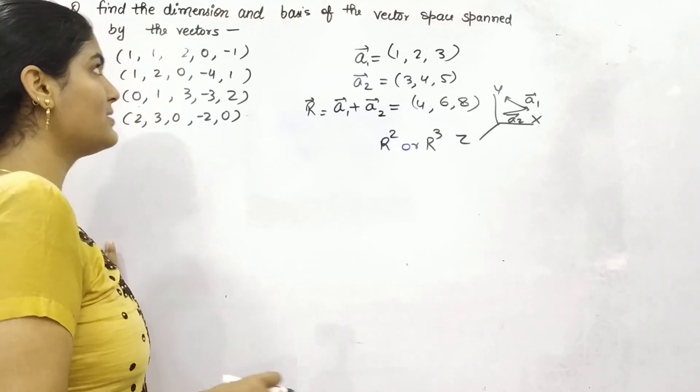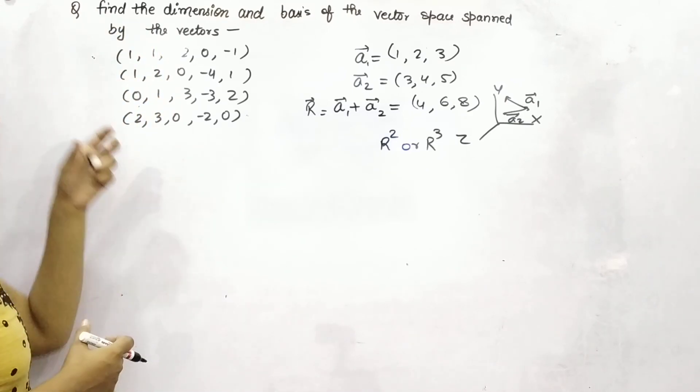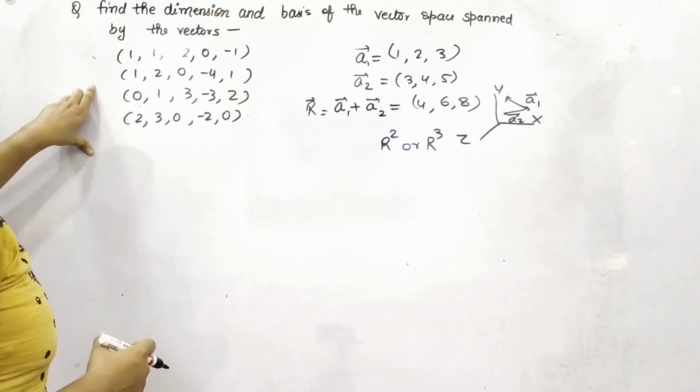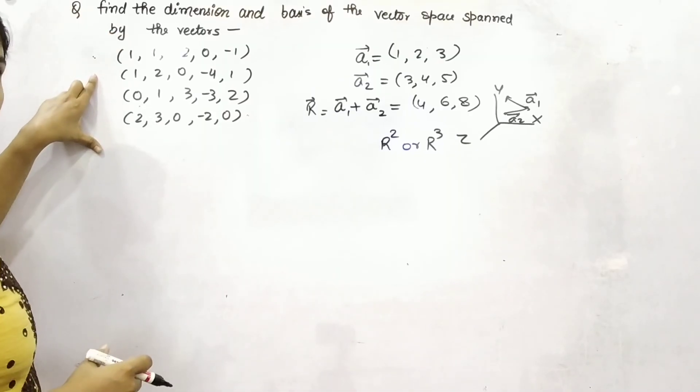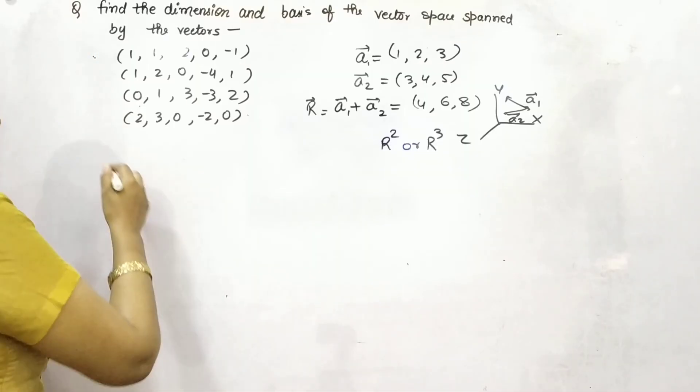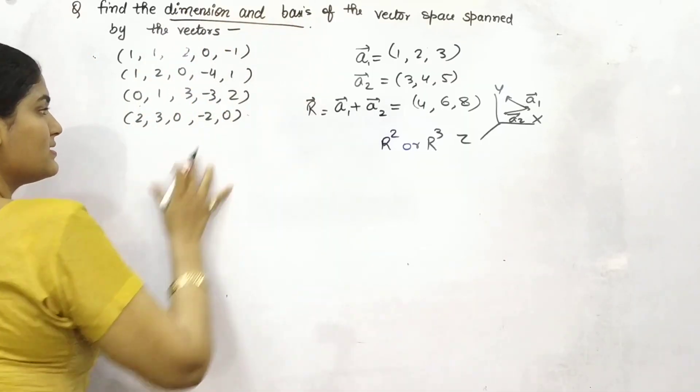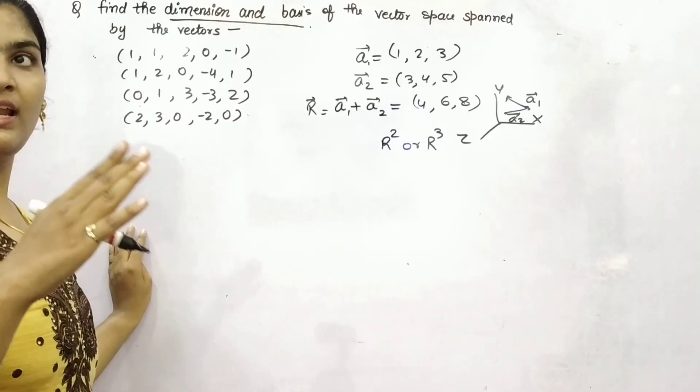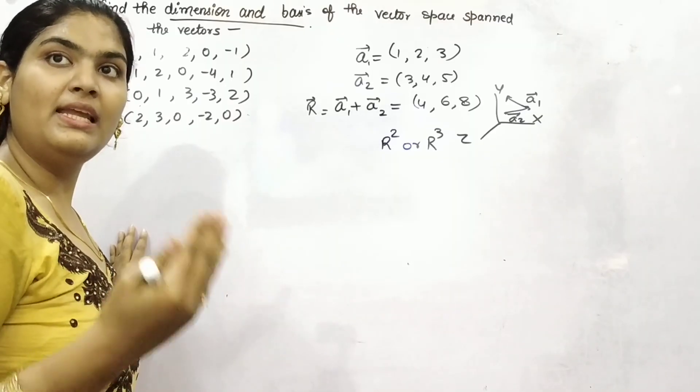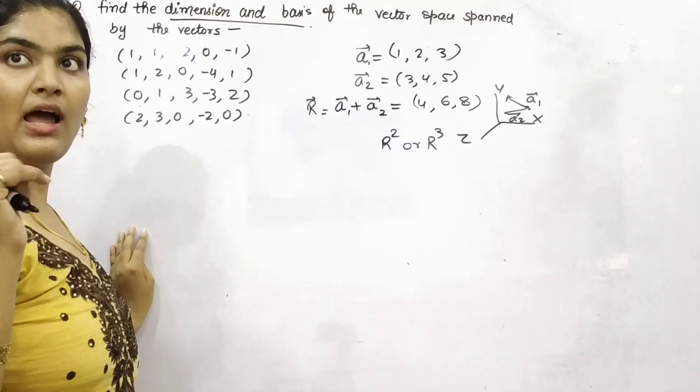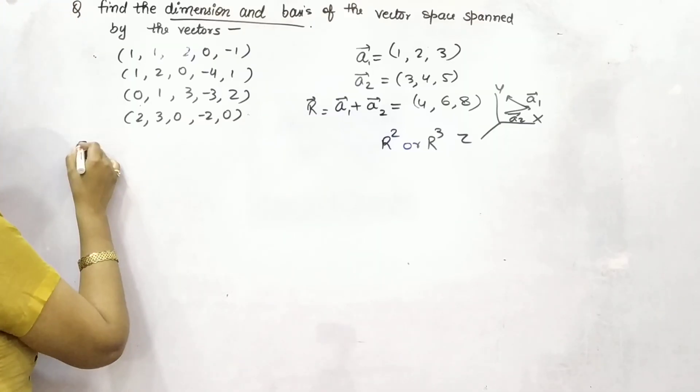So you can see, the span of vectors, the vectors are given to you. What you need to do to find out dimension and bases? First of all, find out, make a linearly independent matrix, and how you can make it? Let me tell you how.